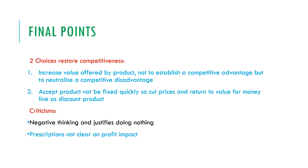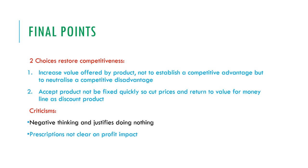The final points are the two choices a business has to restore competitiveness. First, they can increase value by offering a product not to establish a competitive advantage but instead to neutralise a competitive disadvantage. Alternatively, they can accept the product is not going to be fixed quickly and cut prices to return to the value for money line as a discount product. A criticism of Bowman's Strategy Clock is that its negative thinking justifies doing just enough, and prescriptions are not clear on profit impact. Thank you for watching — I've been Alan Hamilton from CAO Entertainment and I'll see you next time.